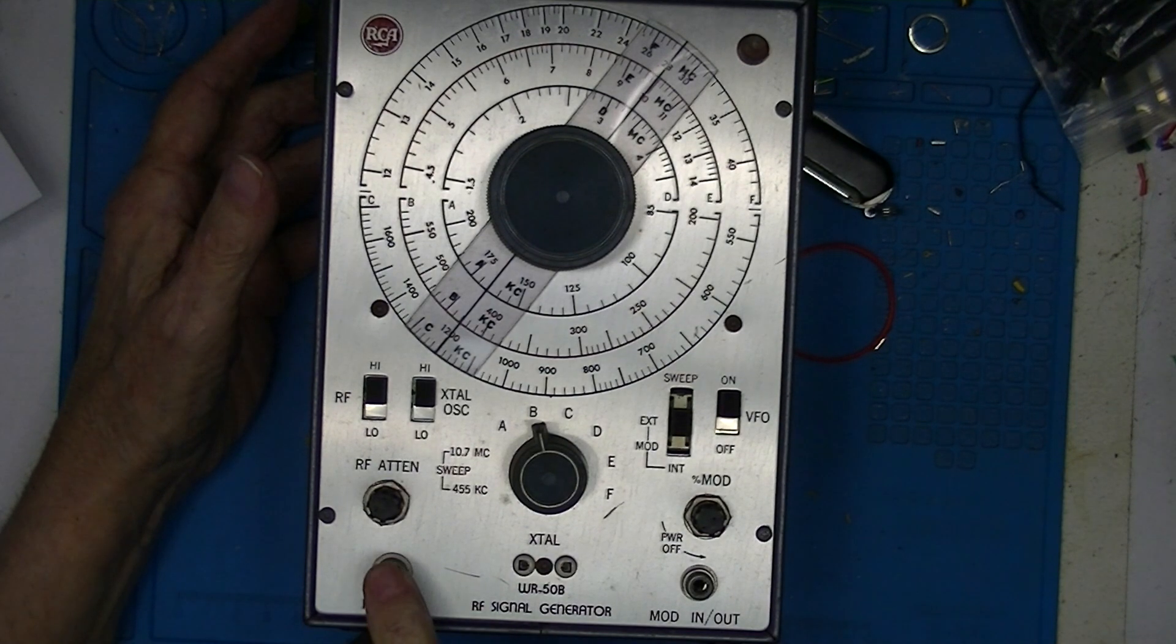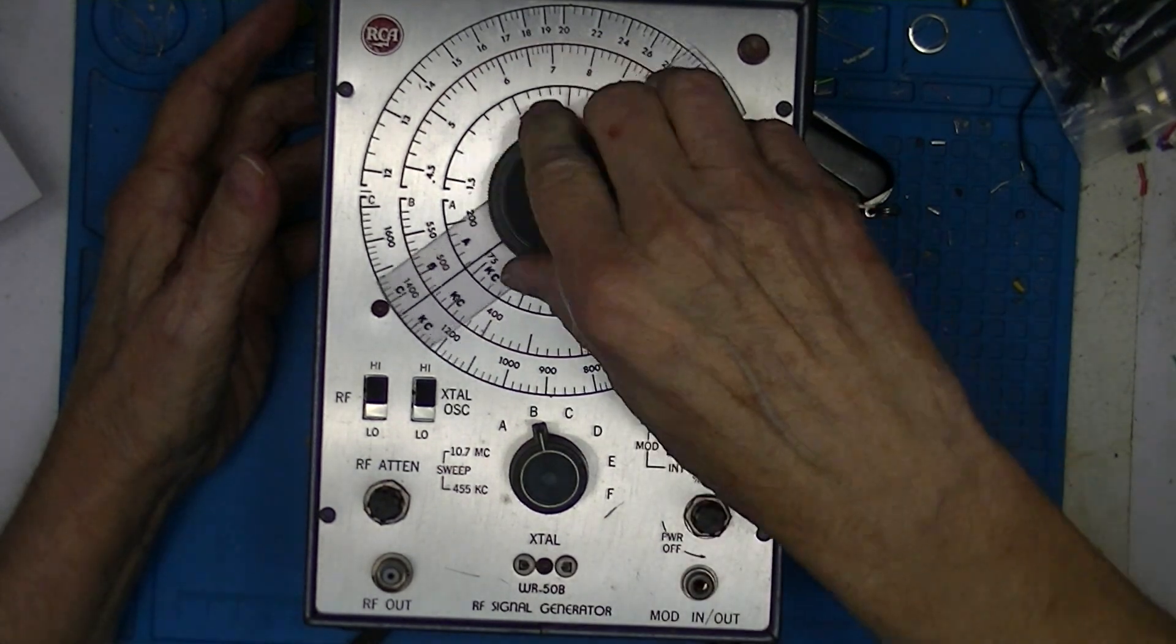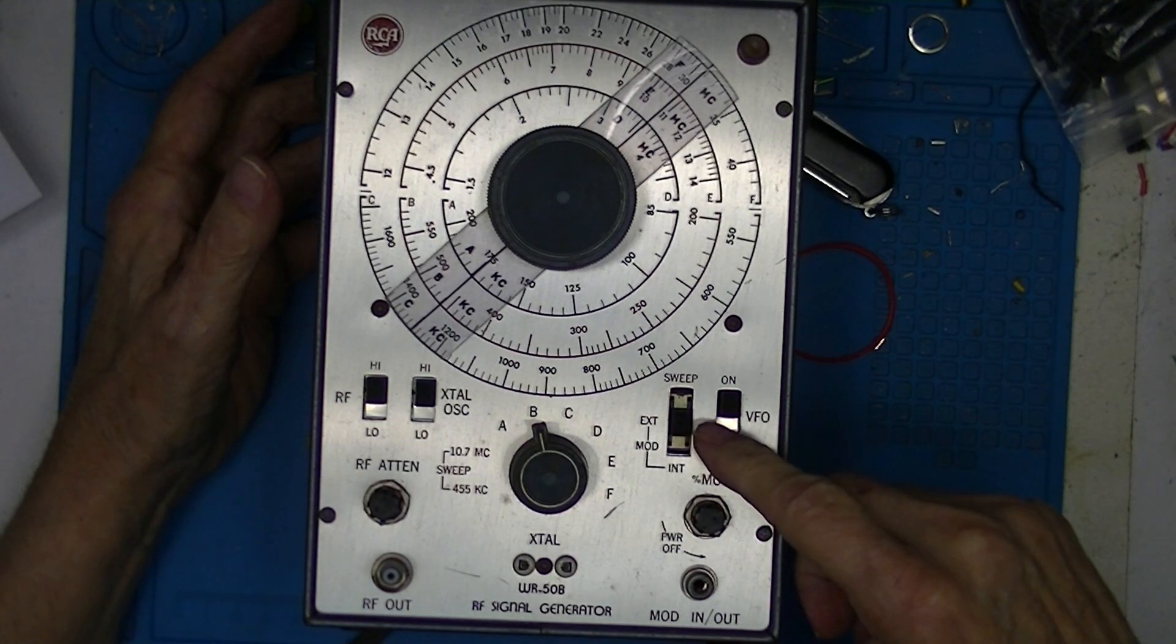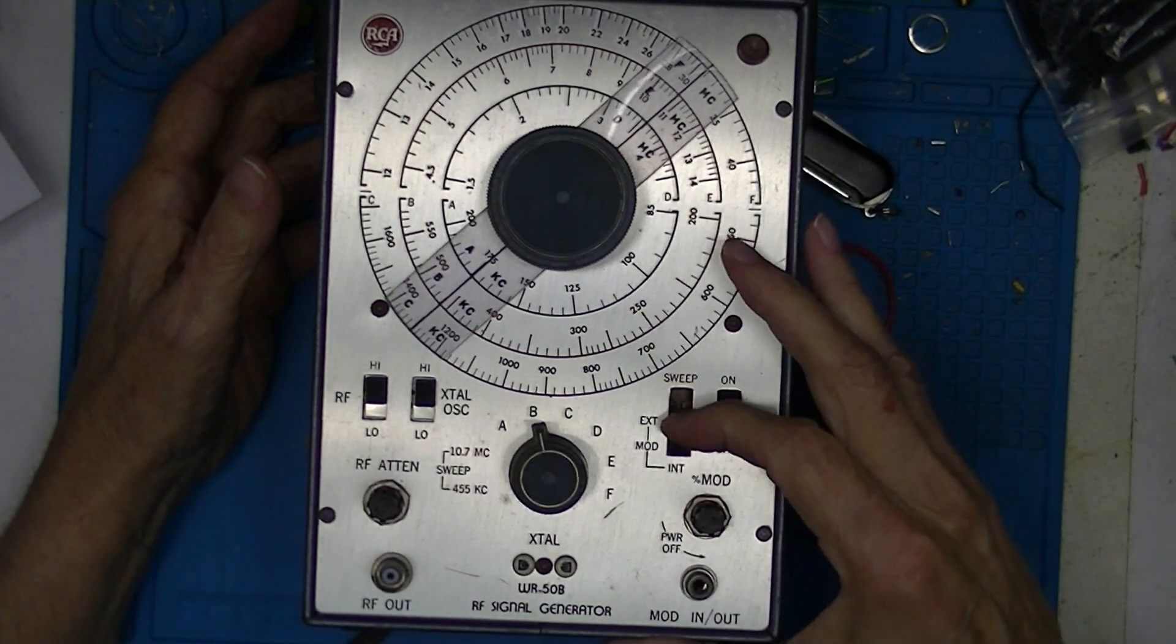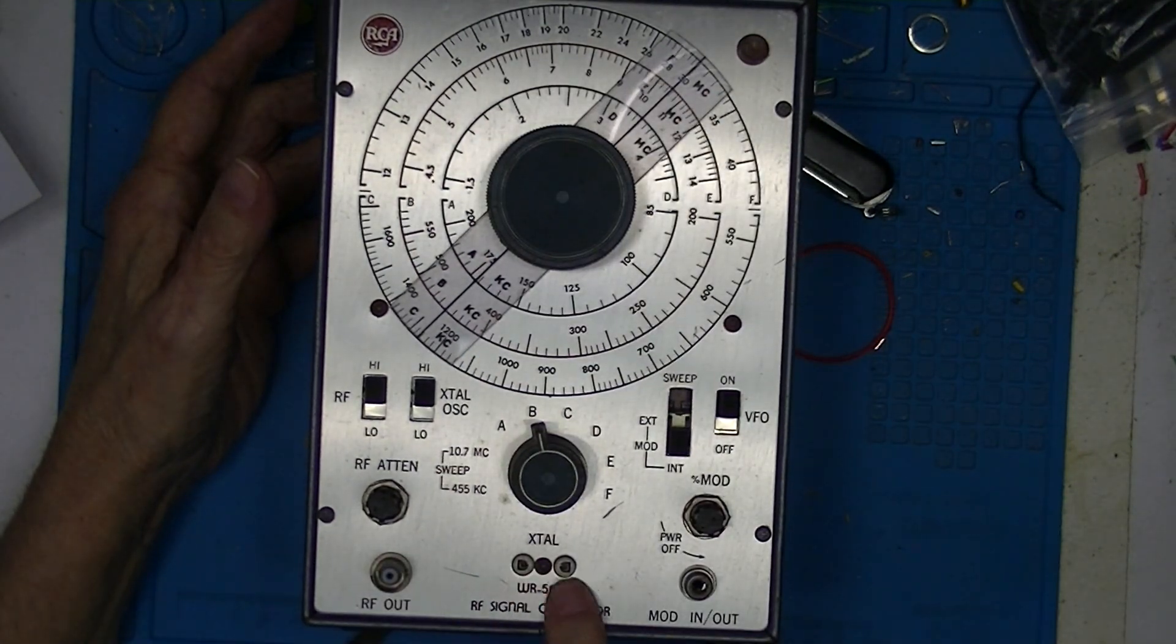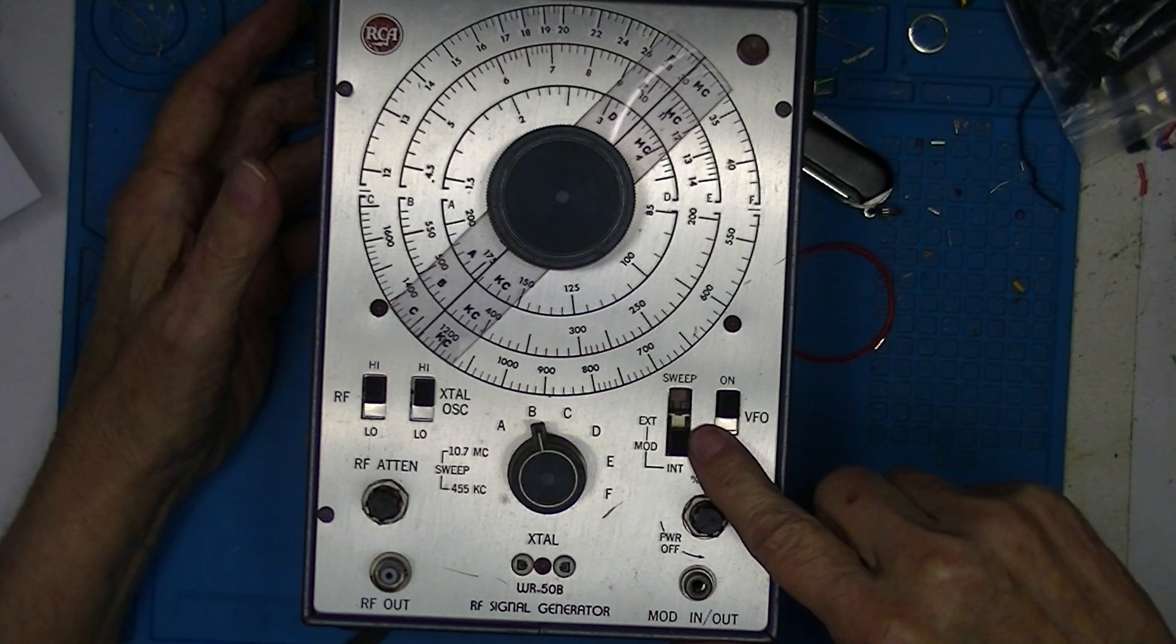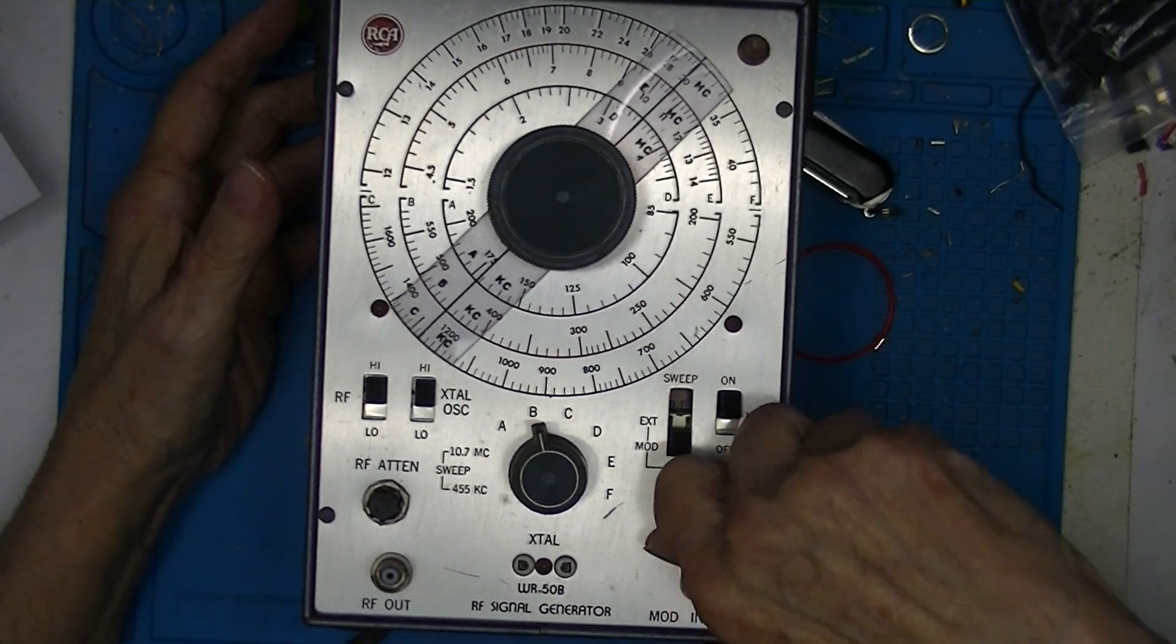Either this adjustable oscillator or a signal generated by the crystal, either one of them, crystal or variable, can be modulated. The modulation can be external, in which case it goes in here, or internal. In which case a modulation is applied to both the variable RF signal and, depending on if the VFO is enabled or not, the signal from the crystal oscillator is amplitude modulated by an internal oscillator. I think it's 400 Hertz, and the percentage of modulation can be varied here. This is also the on-off switch.